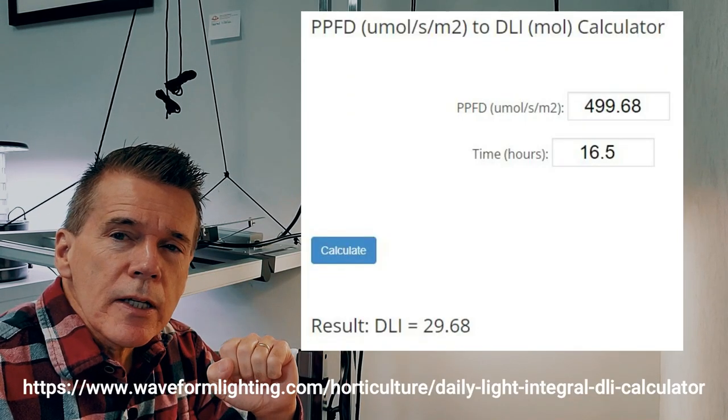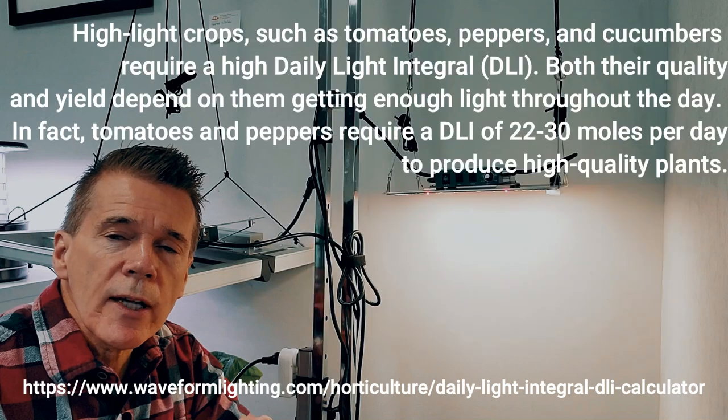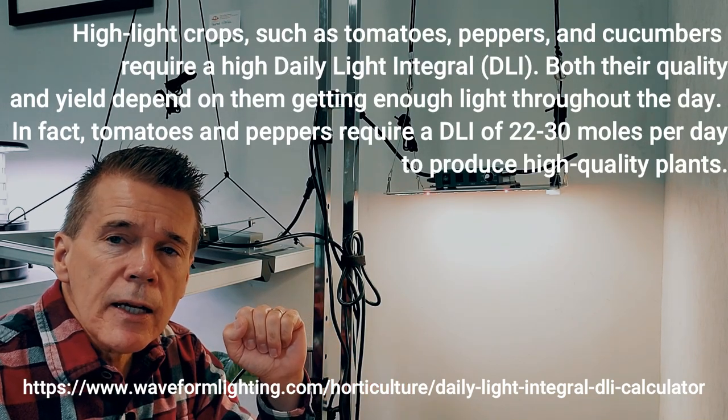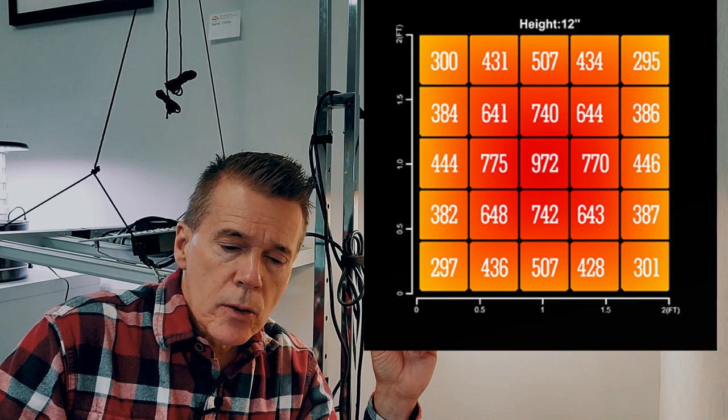What you'll want to do is use a ppfd to daily light integral calculator, which you could find on the web. Daily light integral is often abbreviated as DLI. You'll feed in the average ppfd of this light and the desired DLI, and you can find ratings for plants online. For your particular growing area, you may find that during the summer, you're hitting around anywhere from 25 to 40 on the DLI scale.